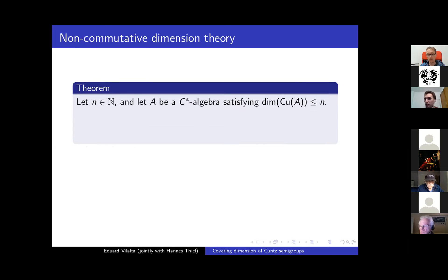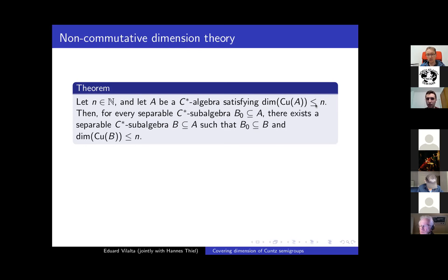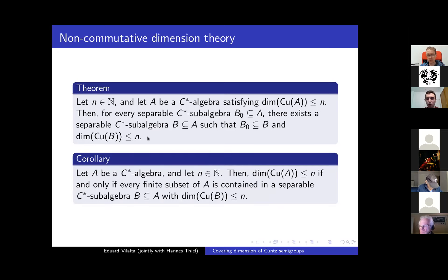D6 is also satisfied: given a C*-algebra A and some n such that dim Cu(A) ≤ n, for every separable C*-subalgebra B₀ in A one can find a larger separable C*-subalgebra B containing B₀ with dim Cu(B) ≤ n. Combining D5 and D6: to study the dimension of the Küng semi-group of a C*-algebra, one only needs to look at its separable C*-subalgebras. The dimension of Cu(A) is bounded by n if and only if every finite subset of A is contained in a separable C*-subalgebra satisfying the required condition.